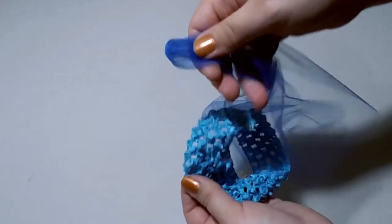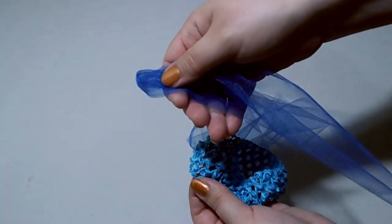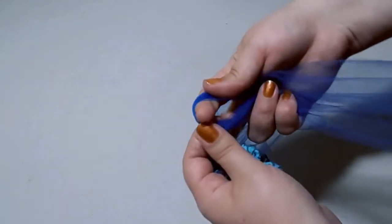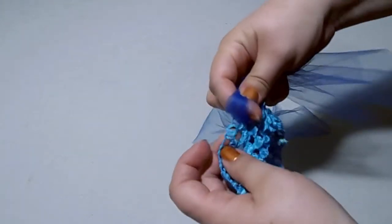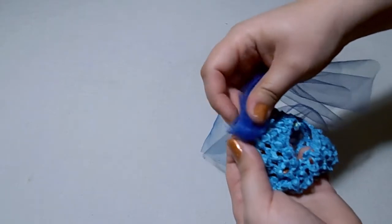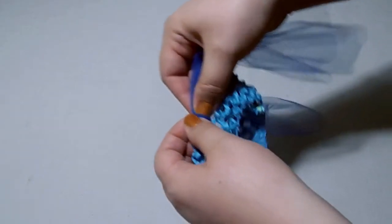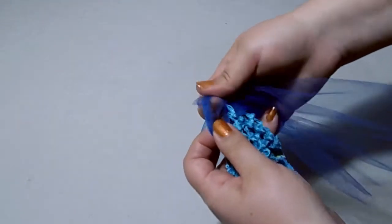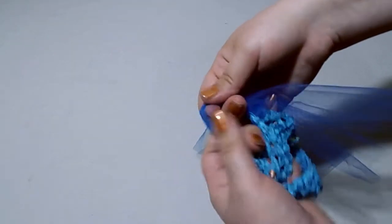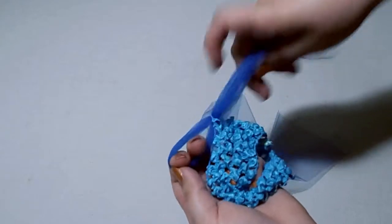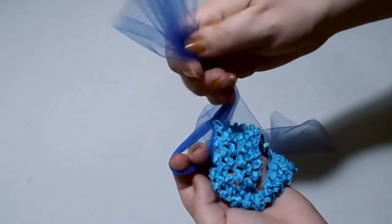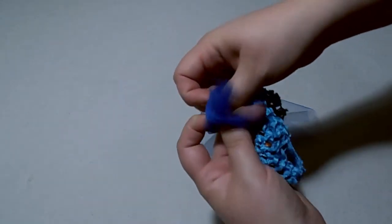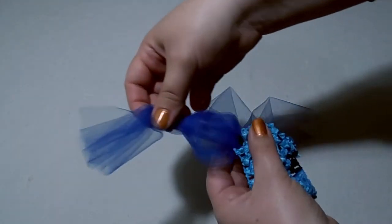What you'll need to do is take your pieces of tulle, fold it in half, insert that loop into one of the holes in the crochet headband along the bottom. Pull the loop through, find the opening, and then you'll insert the tail through that hole and pull it tight.